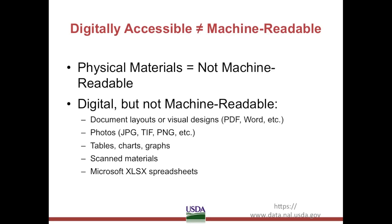For example, PDF and Word documents containing formatting, layouts with charts or tables of data, JPEG or TIFF format images and graphics, scanned materials, and other visual designs are digital, but not machine-readable. Even a Microsoft Excel file is not necessarily machine-readable if it is not structured properly.